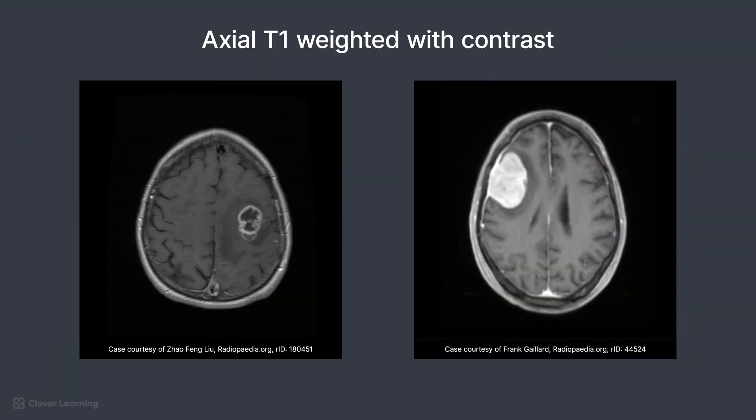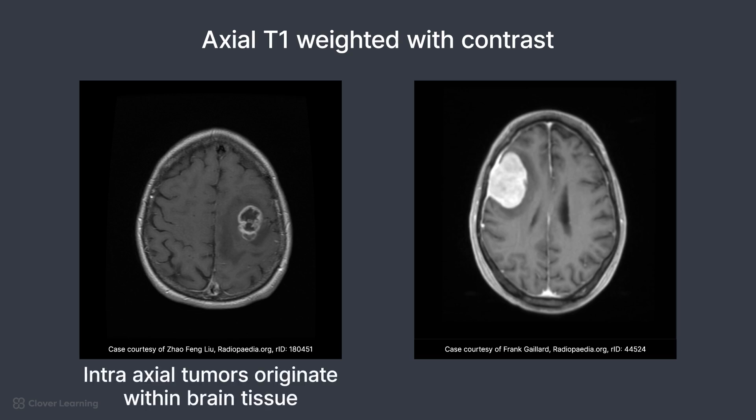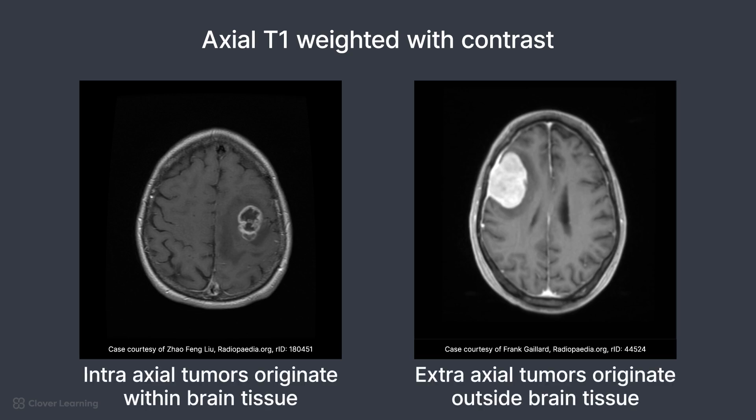There are many different types of tumors that can be an indication for a brain scan. These fall into two specific categories: intraaxial and extraaxial. Intraaxial tumors originate within the brain tissue itself and can include types of gliomas, like an astrocytoma, or metastatic lesions. Extraaxial tumors originate outside the brain tissue but in a contiguous area like the meninges, and can include types of meningiomas or schwannomas.